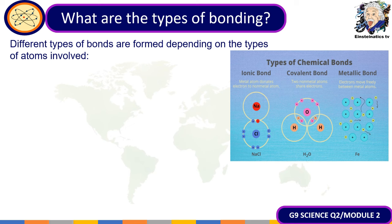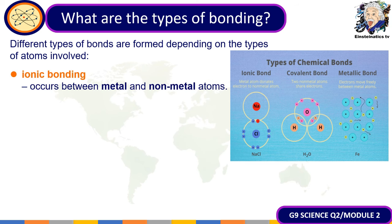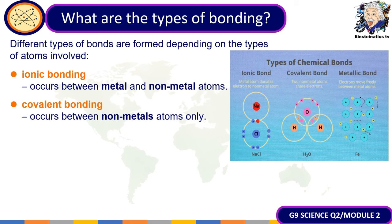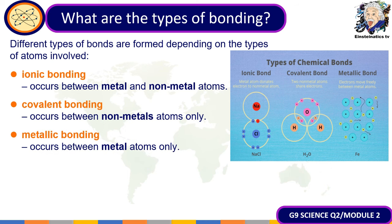Now let's look at the different types of chemical bonding. Bonds are formed depending on the types of atoms involved. There are three types: first, ionic bonding, which occurs between metal and non-metal atoms; second, covalent bonding, which occurs between non-metals; and third, metallic bonding, which occurs between metal atoms only. All bonding involves changes to the number of electrons in the outer shells of atoms.